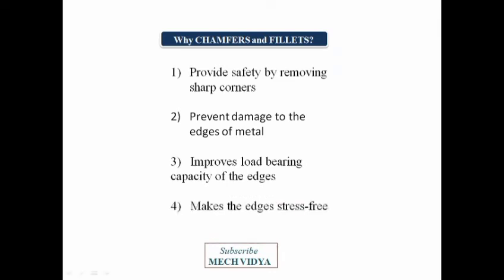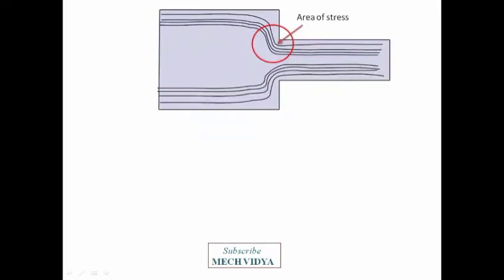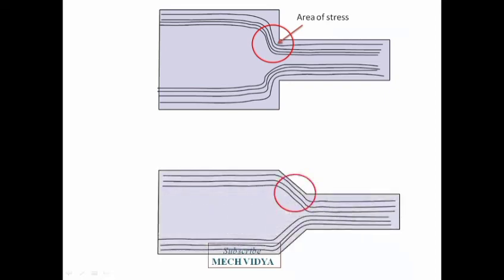If we observe the flow lines near the edges, they have become overcrowded, which implies high stress concentration at the corners. The same product with a chamfered edge has smooth flow lines, as we can see here, which shows lower stress concentration.